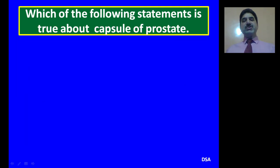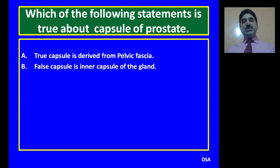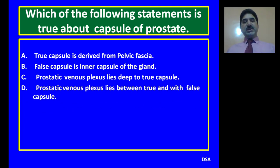Question 3: Which of the following statements is true about the capsules of the prostate? A. True capsule is derived from pelvic fascia. B. False capsule is the inner capsule of the gland. C. Prostatic venous plexuses lie deep to the true capsule. D. Prostatic venous plexuses lie between the true and false capsules. D is the correct option.